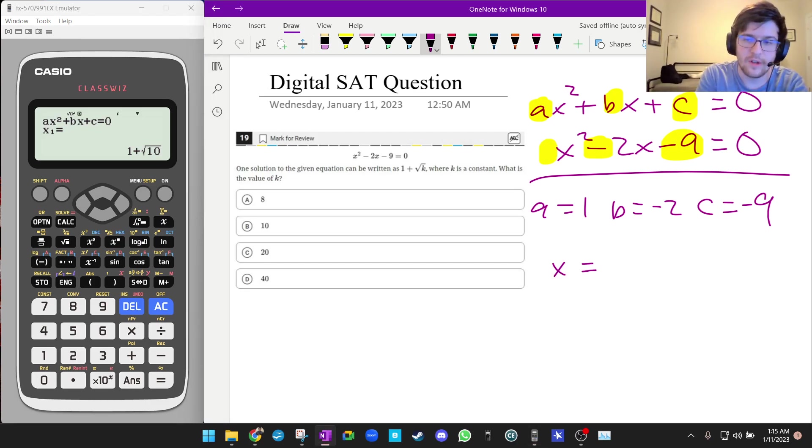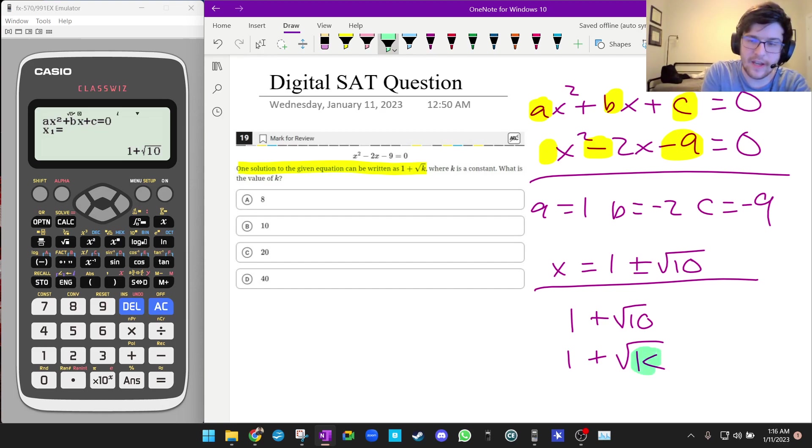The solutions are 1 ± √10. You see they told us one solution is 1 + √K. That's talking about the one with a plus in it. So 1 + √10 is 1 + √K. You see that K is 10, and that is the answer, B.